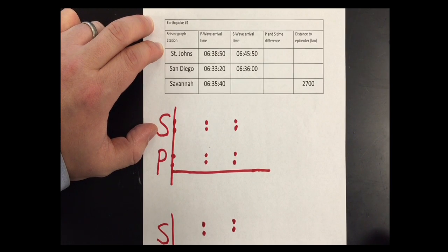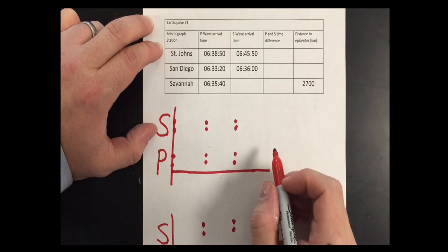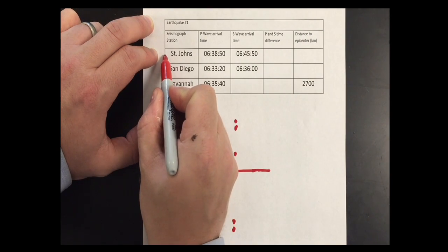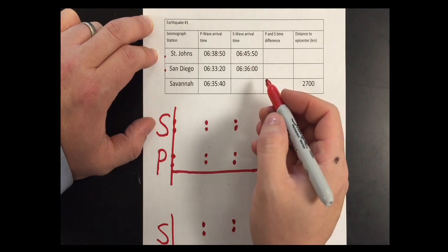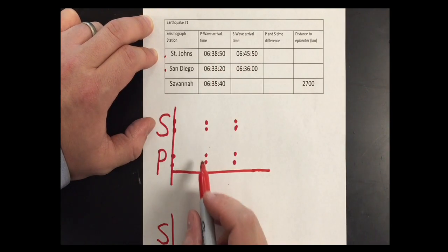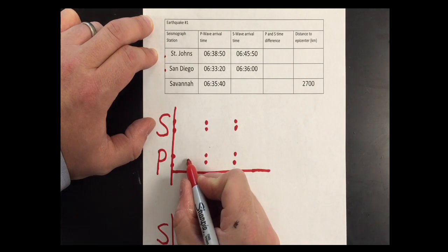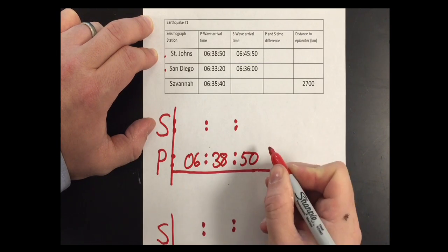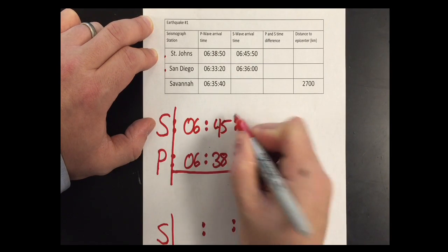The first step is to take any earthquake where we have both a P wave arrival time and an S wave arrival time, and subtract those arrival times to get a P-S time difference. For this particular problem, we have St. John's and San Diego. Let's do St. John's first — we're going to write out the P wave arrival time as 06:38:50 and the S wave arrival time as 06:45:50.